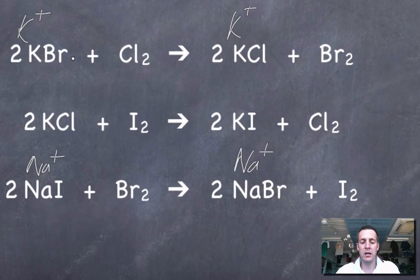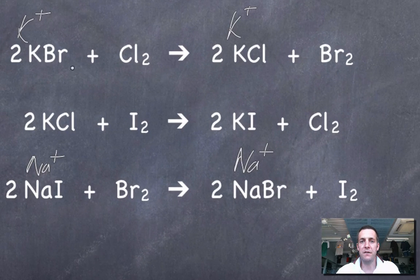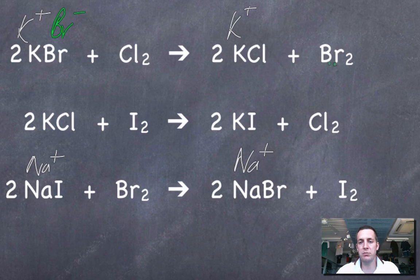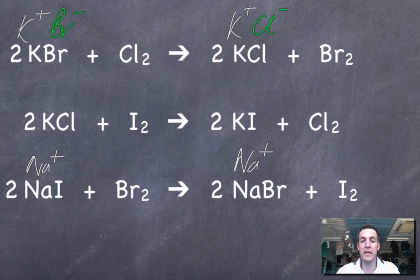Now let's try and decide if this first reaction is feasible. If it's feasible, that means that chlorine atoms would be able to take electrons away from bromide ions and turn them back into bromine molecules whilst in the process becoming chloride ions themselves. If that's going to happen, then chlorine has to attract electrons more strongly than bromine, and we know that it does. So yes, this reaction is feasible.